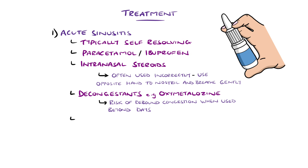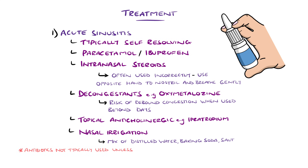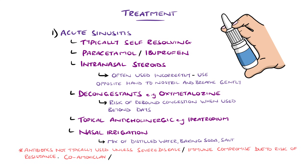Topical anticholinergics like ipratropium can be used for rhinorrhea, and saline irrigation — which can involve mixing distilled water, baking soda, and salt, then using a large medical syringe or squeeze bottle to gently propel water through the nose and out of the mouth or the other nostril — is also an option. Antibiotics are only recommended in select patient groups, such as severe disease, persistent or worsening symptoms, or immunocompromised patients, because symptoms often resolve without intervention and there is a risk of antimicrobial resistance. Co-amoxiclav is generally the first-line agent, with doxycycline or clarithromycin as options in penicillin-allergic patients.